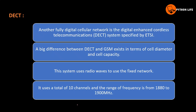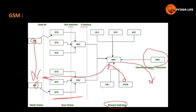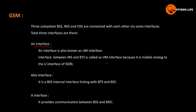The A-interface connects BSC and MSC. BSC is under the base station controller connected to the mobile switching controller. The connection between BSC and MSC is via the A-interface. This completes the GSM interface overview.